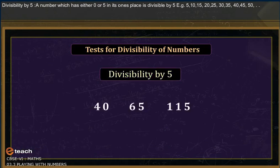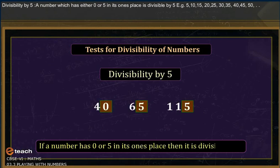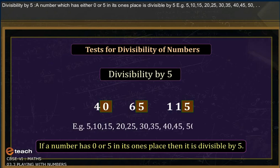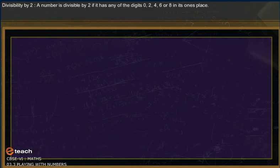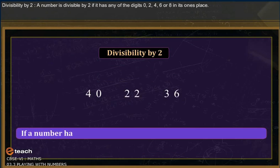Divisibility by five: a number which has either zero or five in the ones place is divisible by five. Examples: 5, 10, 15, 20, 25, and so on.